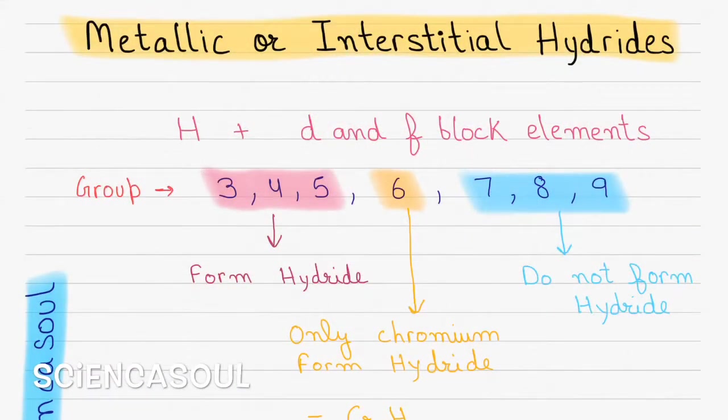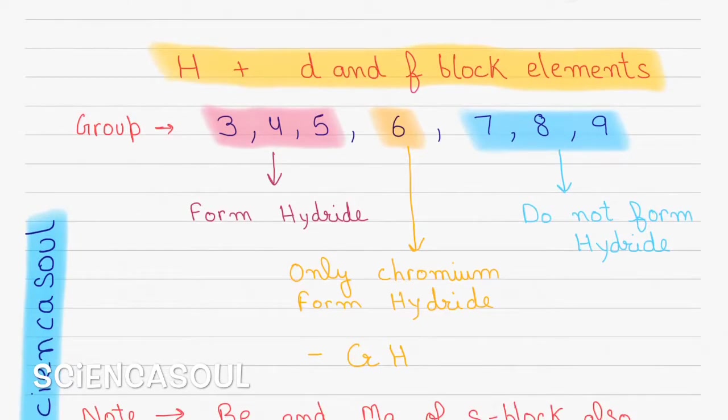Now last part of this video: metallic or interstitial hydrides. These are formed when hydrogen combines with d and f-block elements. So let's see here, group numbers are given in red color. They form hydride: group 3, 4, 5 form hydrides, while in group number 6 only chromium forms hydride. Remember, thus only chromium forms hydride. And group number 7, 8, 9 do not form any hydride.